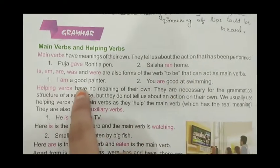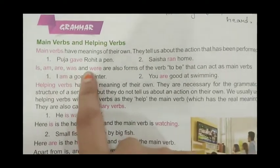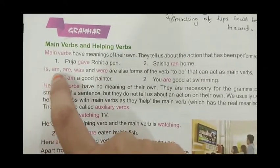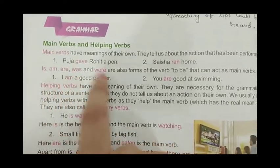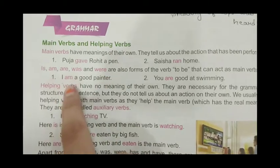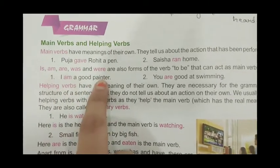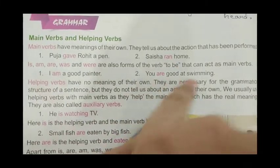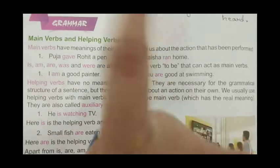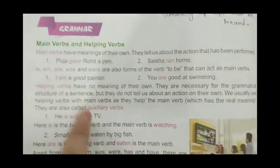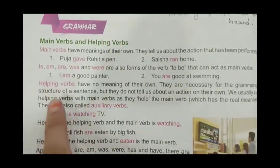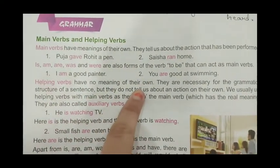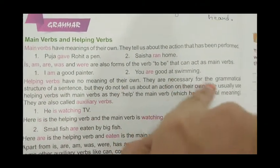So 'to be' forms — is, am, are, was, were — can come in as main verbs. For example: 'I am a good painter' — main bahut achha painter hoon. 'You are good at swimming' — tum swimming mein bahut achhe ho. Now, helping verbs have no meaning of their own; they are necessary for the grammatical structure of the sentence but do not tell us about an action.